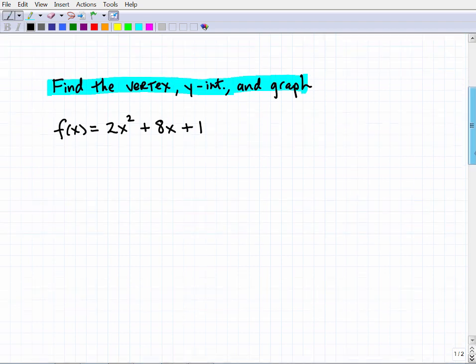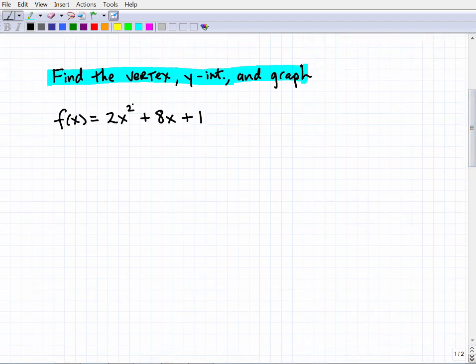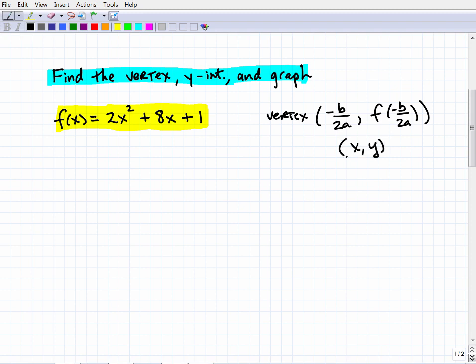Okay, so finding the vertex of what do we have here? Well, this is a quadratic function. It's a quadratic function, so the way we find the vertex is, let me just write the format down: it's -b over 2a is the x-coordinate, and the y-coordinate is going to be—we're going to evaluate the function at -b over 2a. Okay, so this will be our x and y coordinate. So let's focus on that first, and then we'll get back to the y-intercept and we'll give this thing a quick sketch.